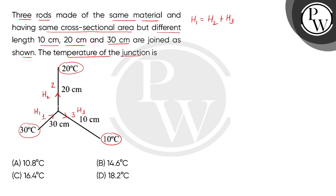अब हमें इस junction का temperature find करना है। इसके लिए पहले heat flow का formula लेंगे: Q = K × A × temperature gradient × time.